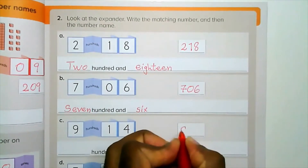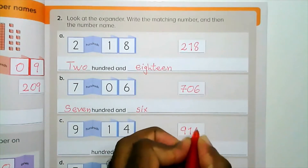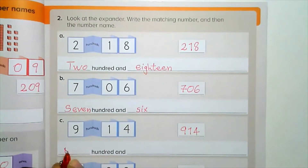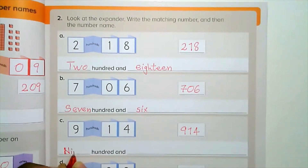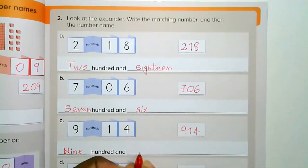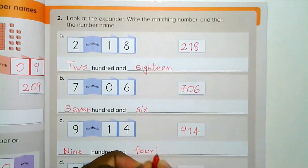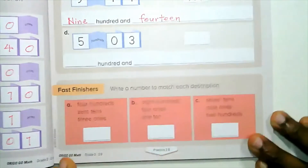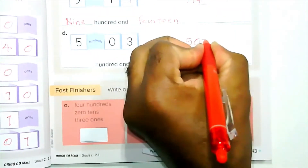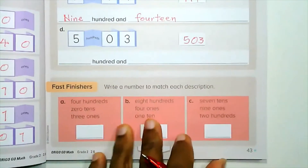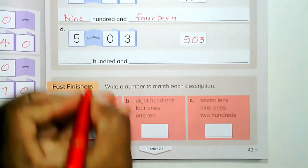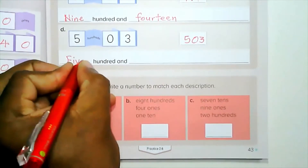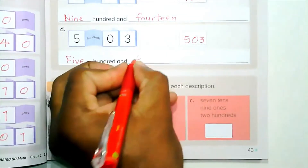Nine hundred and fourteen for part C. We write it as nine hundred and fourteen. Part D: five hundred and three — we write it as five hundred and three.